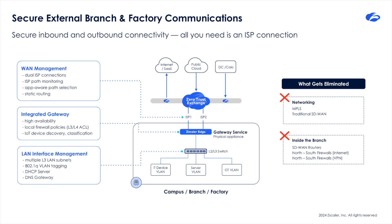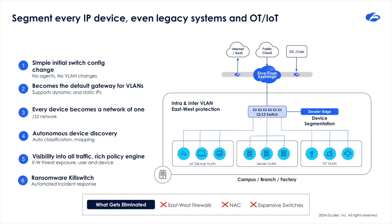With zero-trust device segmentation and centralized visibility and logging, we eliminate lateral threat movement inside your network. Instantly reduce complexity and risk with seamless deployments and no need for endpoint agents. We enforce policy on every endpoint without adding software, and we segment every IP device into a network of one — no agents, no east-west firewalls, or NAC required. We also automate incident response with our patented ransomware kill switch, which allows for instant blocks for risky protocols to reduce the blast radius of a breach with granular surgical control, including pre-programmed and custom policies.